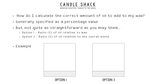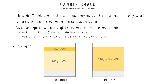In option one, we start with 200 grams of wax and we take 10% of this — 20 grams of oil — so that would be 10% scent load relative to the wax. In option two, we start with a total of 220 grams; if we take one tenth of this we get 22 grams of oil and 198 grams of wax.